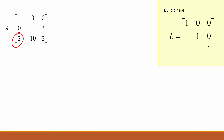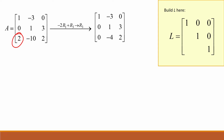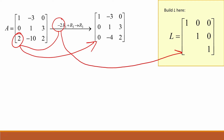Begin by trying to reduce A into an upper triangular matrix. For the element two in row three, multiply row one by negative two and add it to row three to get a new row three. Since we multiplied by negative two to turn this two into a zero, we take the opposite of negative two and place it in the corresponding area in our L matrix — that is, two.